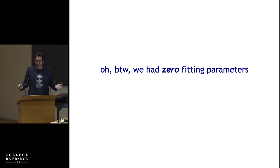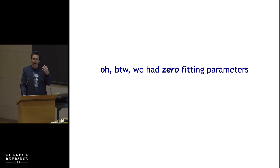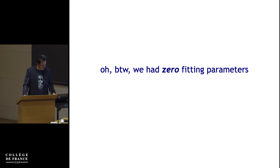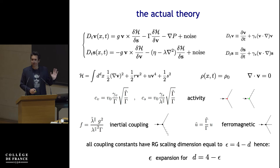By the way, zero fitting parameters here — this is what is great about RG. I didn't fit anything. There is absolutely no input from the data, apart from the qualitative understanding — for example, that you need inertia because otherwise you don't have a propagating wave. Those are all qualitative ingredients you put in by scratching your head and writing the theory. But the theory has many parameters, and we didn't fit any of them — they all flow under the RG to a fixed point. The value 1.3 has absolutely zero fitting parameters, which I think is quite remarkable for biology.